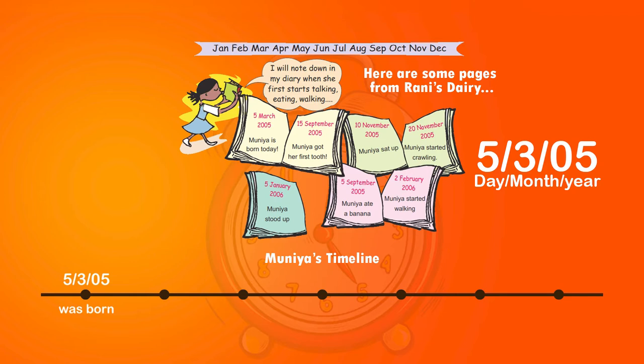The first entry is 5th March 2005. March is the third month, so it can be written as 5/3/05. This is another way of writing the date. Muniya was born on this day, so below this we write 'was born.'